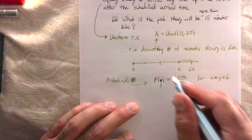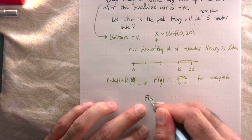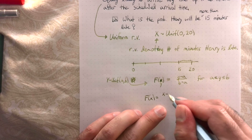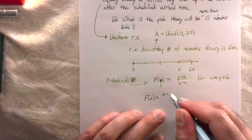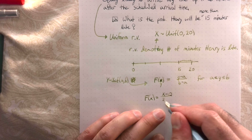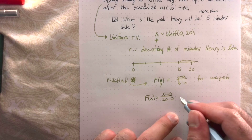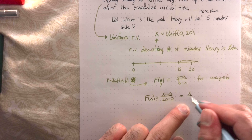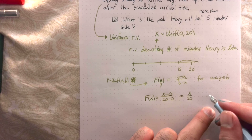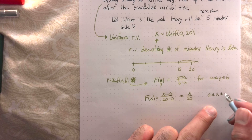In our case, the CDF F(x) equals x minus a, where a = 0, over b − a = 20 − 0. So this simplifies to F(x) = x / 20, for x between 0 and 20.